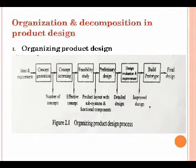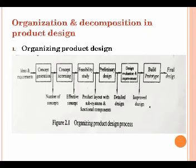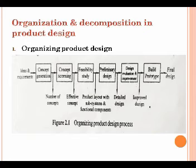After feasibility, the product layout with subsystems and functional components is defined. Then preliminary design — a rough design of the product — is done, followed by detailed design. Design evaluation and improvements are carried out to identify errors and arrive at an improved design. Finally, a prototype is built and the final design is selected. This is the flowchart of the organizing product design process.